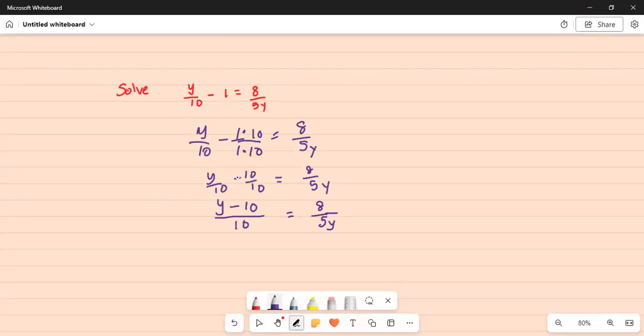Now multiply both sides by 10. So I'm multiplying by 10 on both sides. I'm doing that to remove the 10 from the denominator on the left side. So on the left side I will be left with y minus 10 is equal to now 5 goes into 10 two times. So I have 16 over y.